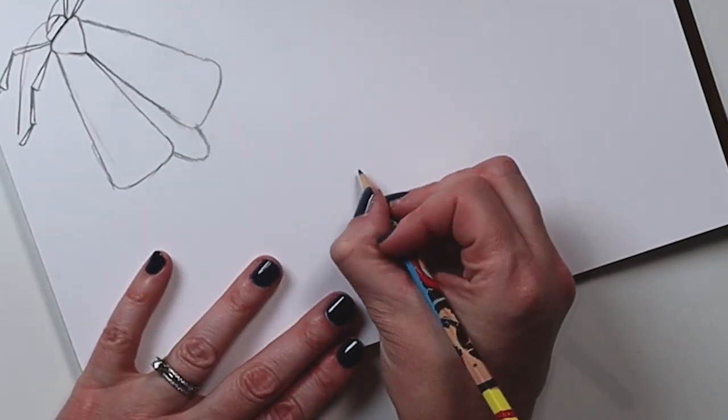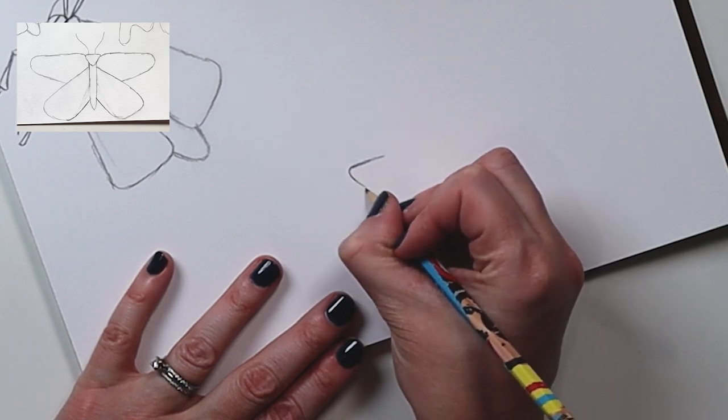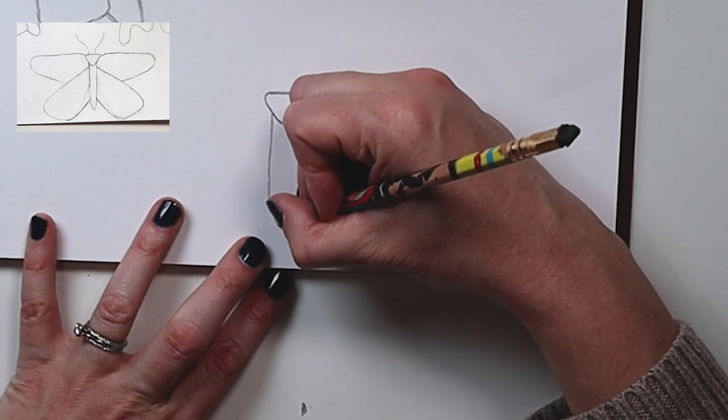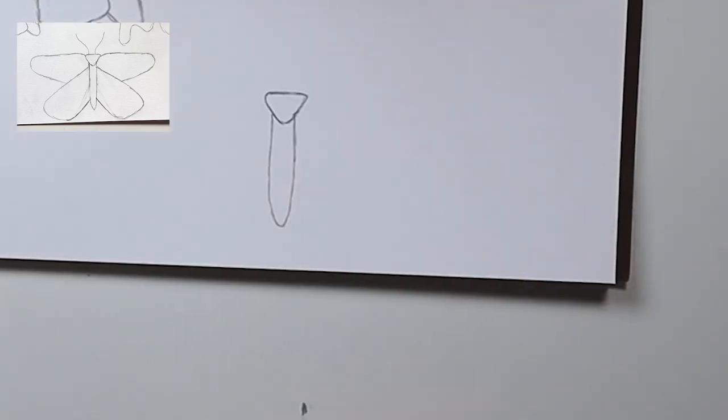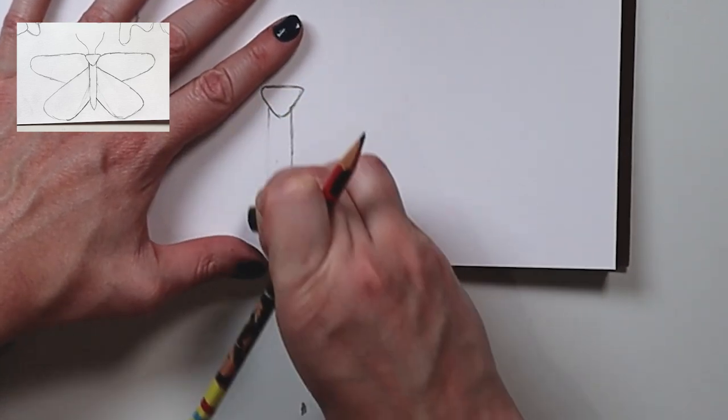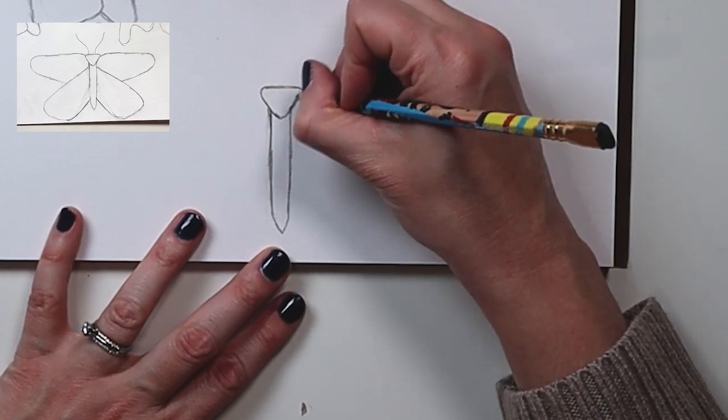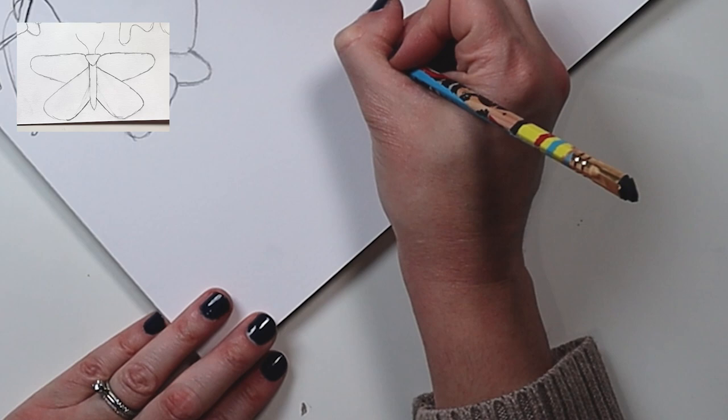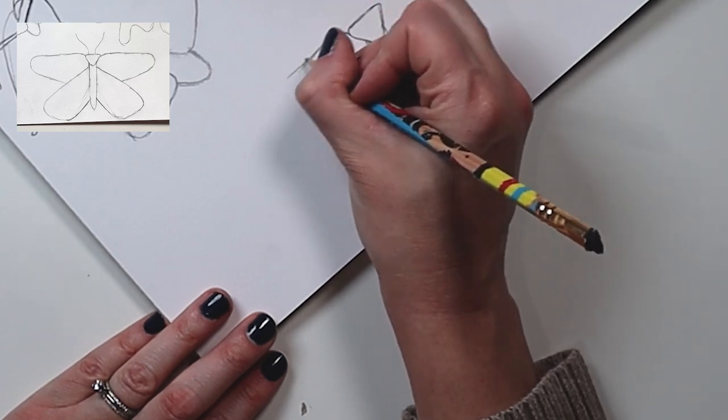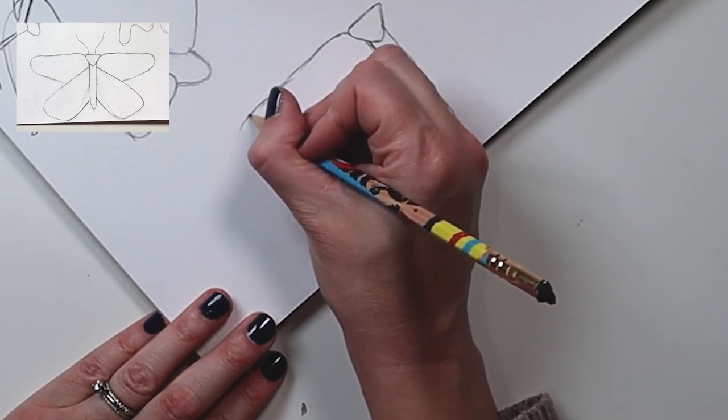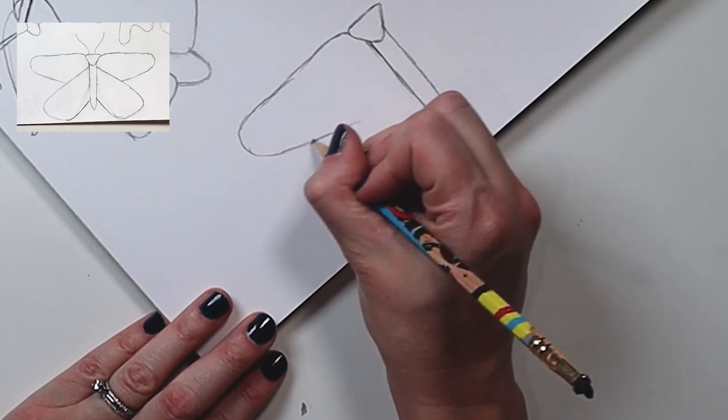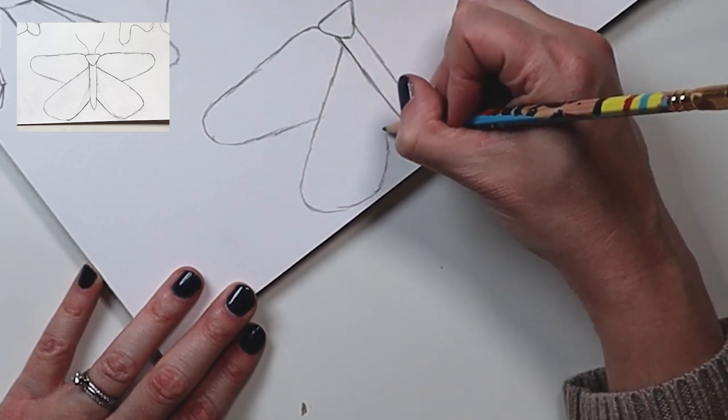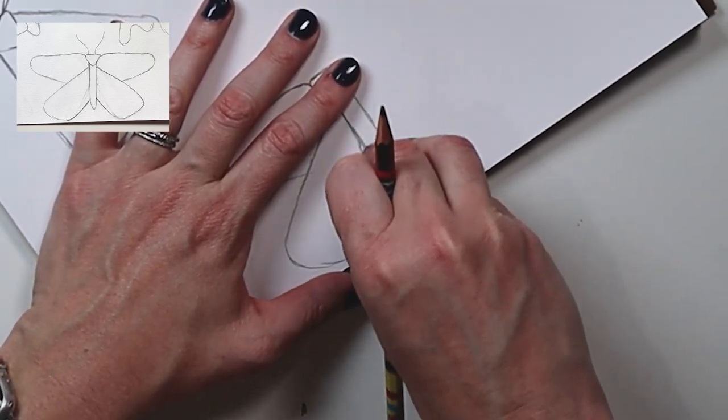For our next moth we're going to draw the body. So again a triangle with rounded edges and then an elongated triangle with a rounded tail for the body. That's a little bit thick so I'm just going to make that a little bit thinner. And then we're going to draw the one side of the wings. We're going to start off with the top of the wing, curve out like this and go out to the end, and then curve down toward the body. For the bottom portion we're going to do the same, kind of like a teardrop.